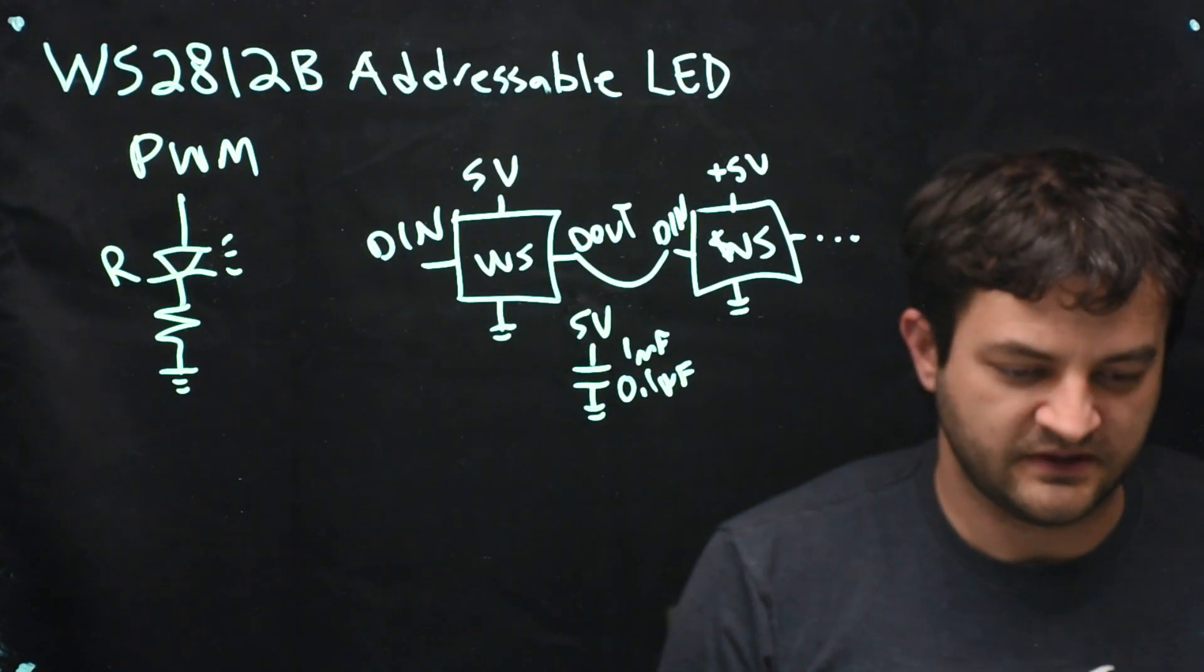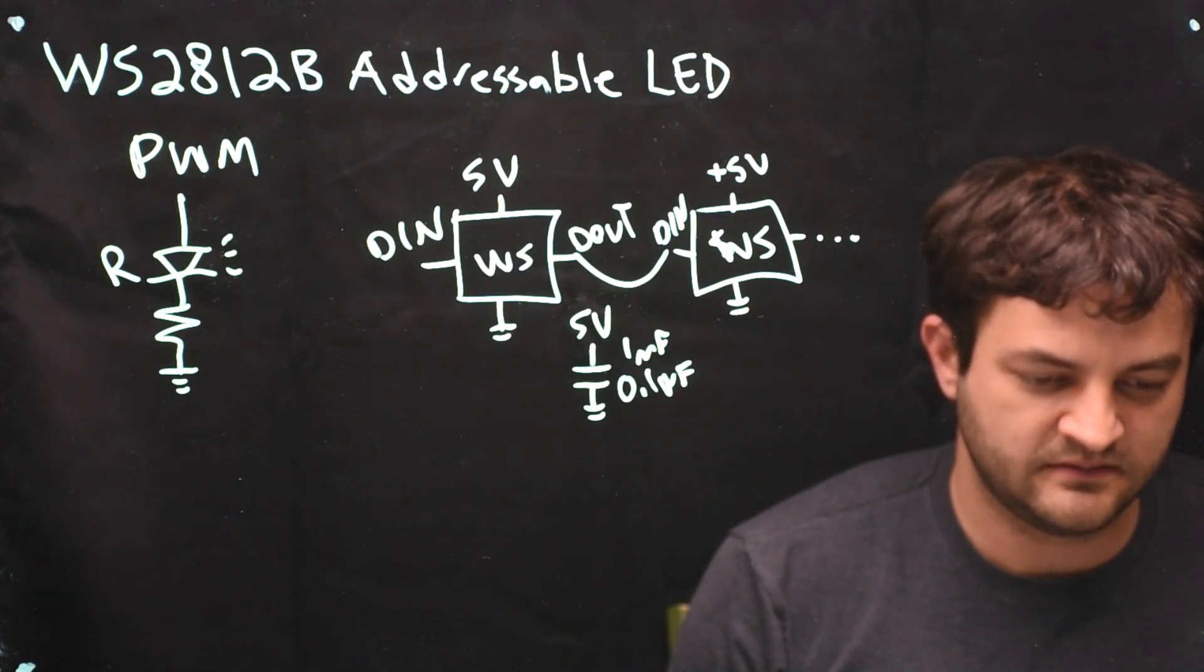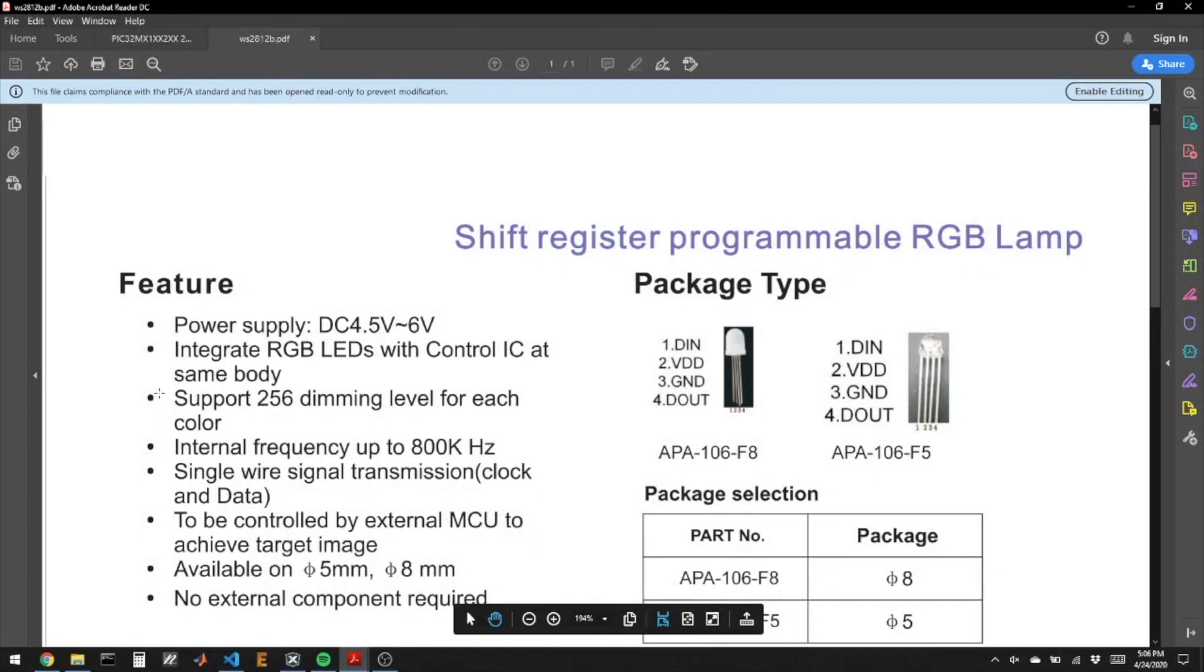Let's look at the datasheet for one of these chips. This particular version is an 8mm LED, so it's a very big LED. I bought them from SparkFun, but there are lots of other vendors for what they call NeoPixels. They come in strips, matrices, and bars. There's just lots of these out there. They're very popular and very inexpensive, down to like 10 or 15 cents per LED, which is pretty cheap.